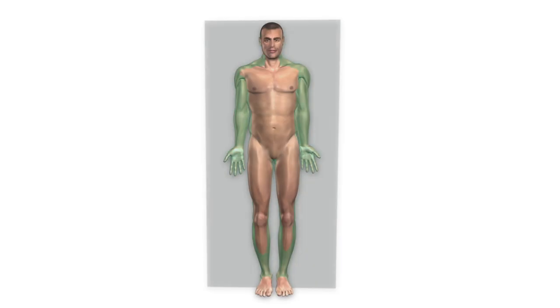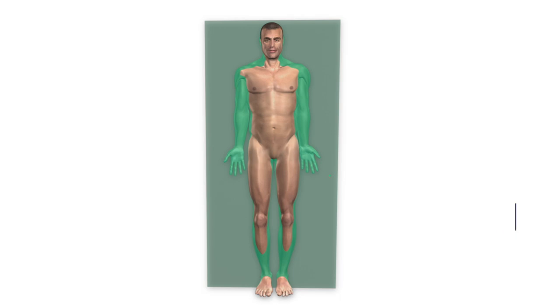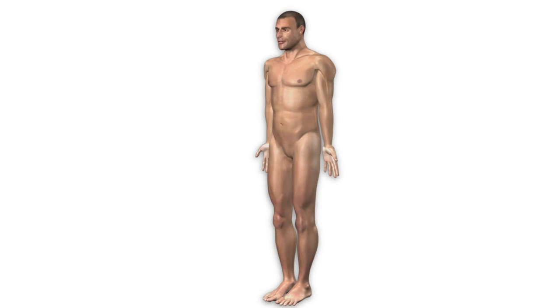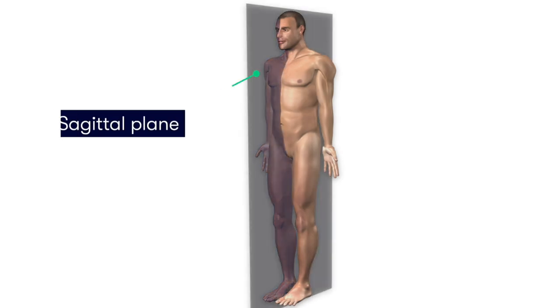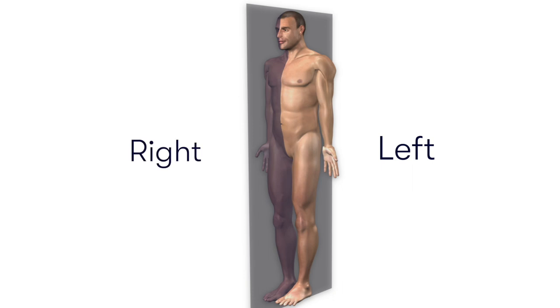The coronal plane is a vertical plane that divides the anatomical body into an anterior part and a posterior part. The sagittal plane is also a vertical plane but it's at 90 degrees to the coronal plane, going straight down the middle of the body and essentially dividing it into a left part and a right part.